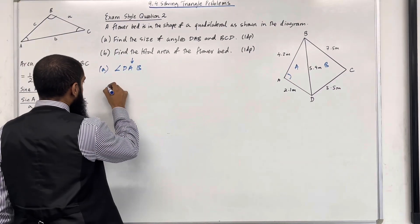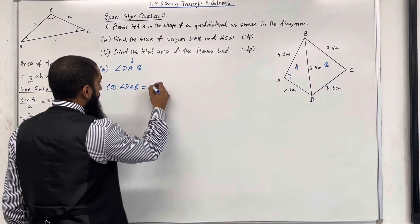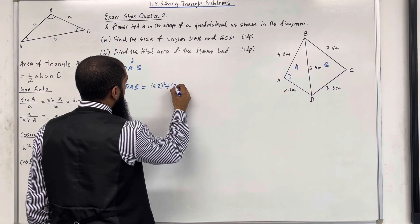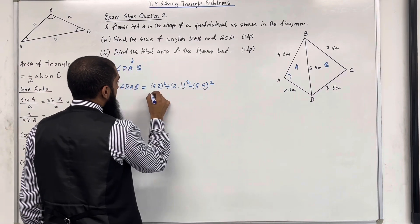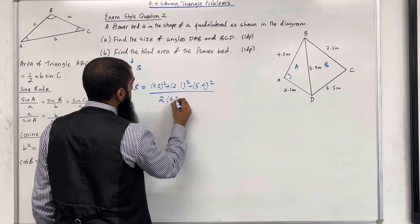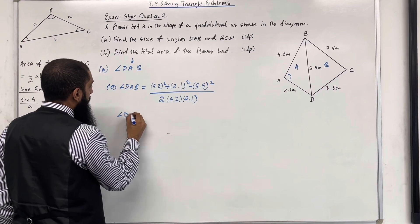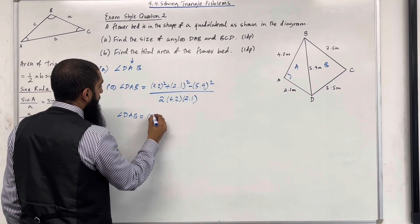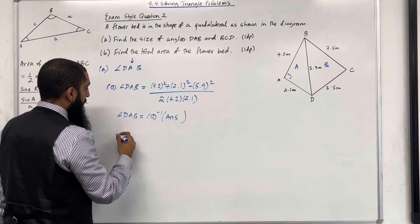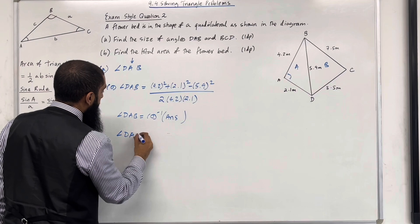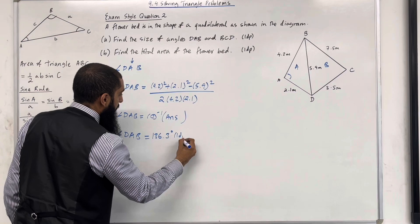Using the cosine rule: cos(angle DAB) equals 4.2 squared plus 2.1 squared minus 5.9 squared, all divided by two lots of 4.2 multiplied by 2.1. To work out angle DAB, we take cos inverse of that fraction. So angle DAB equals 136.3 degrees to one decimal place.